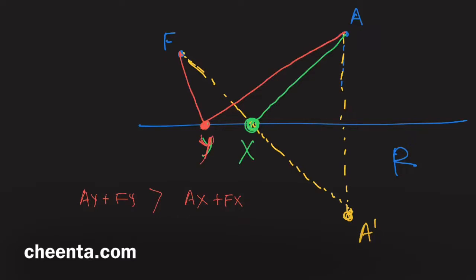Some other point than X. If we can show for any point Y here, A Y plus F Y will be larger than A X plus F X, then we would be able to conclusively say that A X plus X F, this is the shortest path or the shortest distance that we can think of.